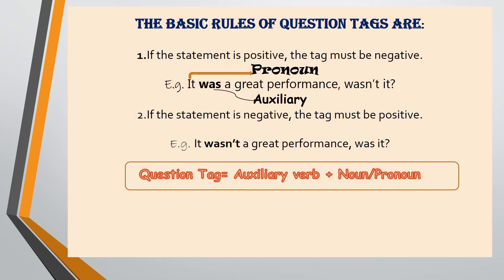The basic rules of question tags are: if the statement is positive, the tag must be negative. Let's look at the example: 'It was a great performance, wasn't it?' 'It was a great performance' is a positive statement, hence the tag needs to be in the negative — 'wasn't it?'